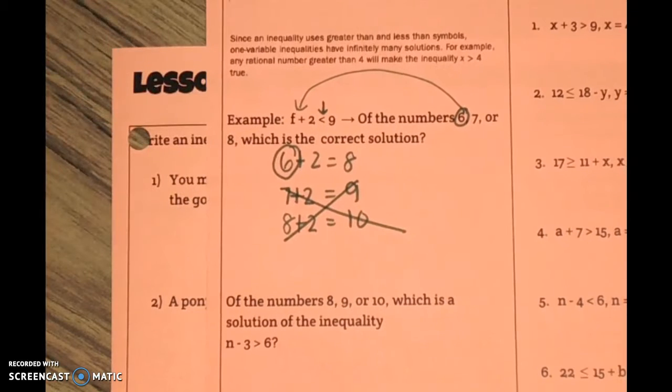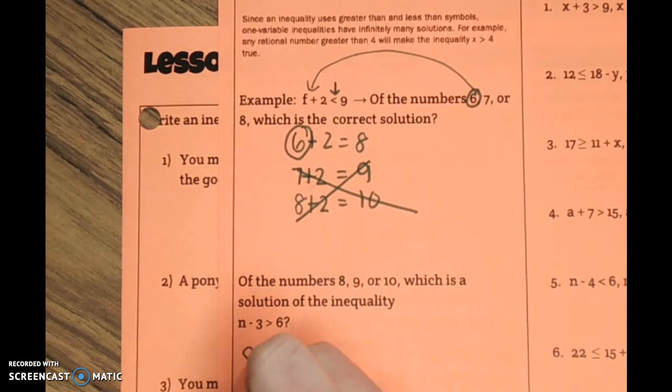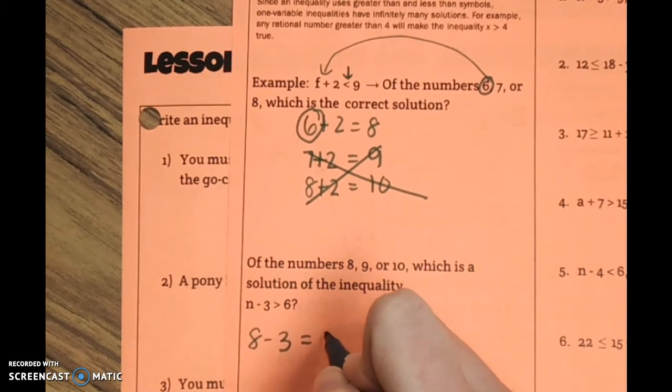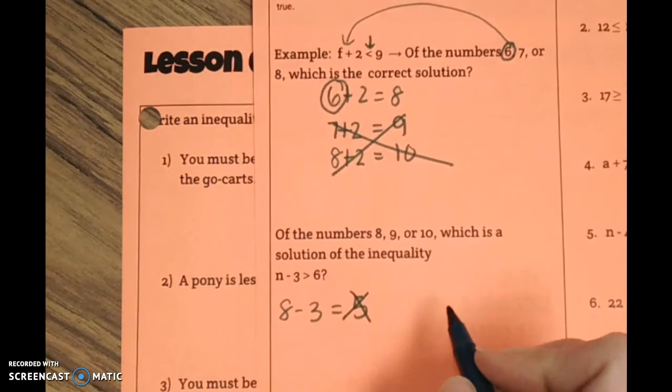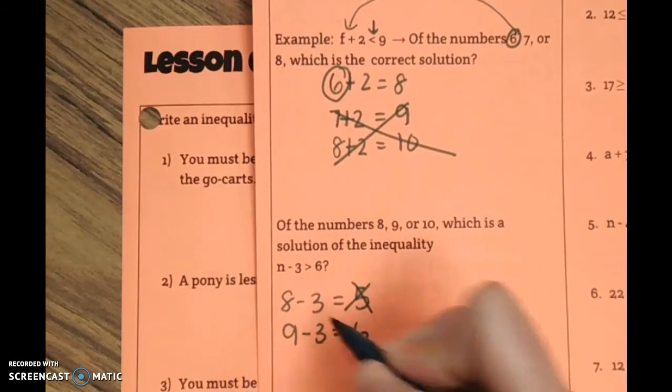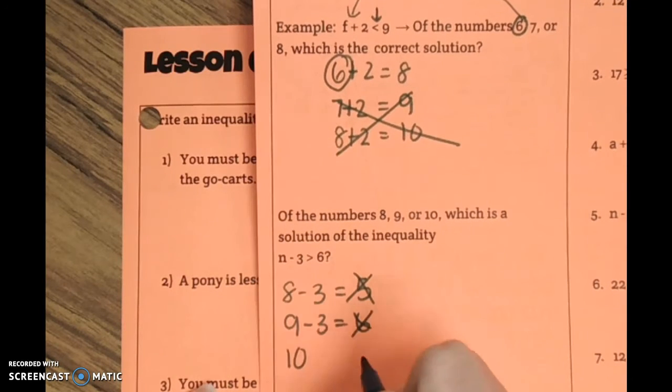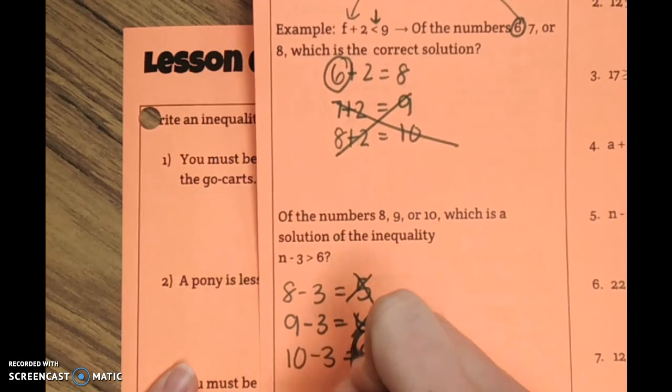Let's look down here. Of the numbers 8, 9, or 10, which is a solution to the inequality? So, if I do 8 minus 3, I get 5. Now, is 5 greater than 6? No. Let's try 9. 9 minus 3 equals 6. 6 is not greater than 6. And then we have 10. 10 minus 3 is 7. Is 7 greater than 6? Yes. So, this is our correct answer right there.